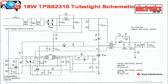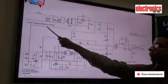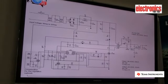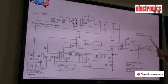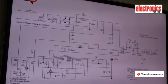Let us have a look at one of the designs based on TI's TPS92310. This is a standard 18 watt tube light design. The input specifications are 85V to 265V universal AC input. The output is 42V at 420mA, which is isolated from the input.